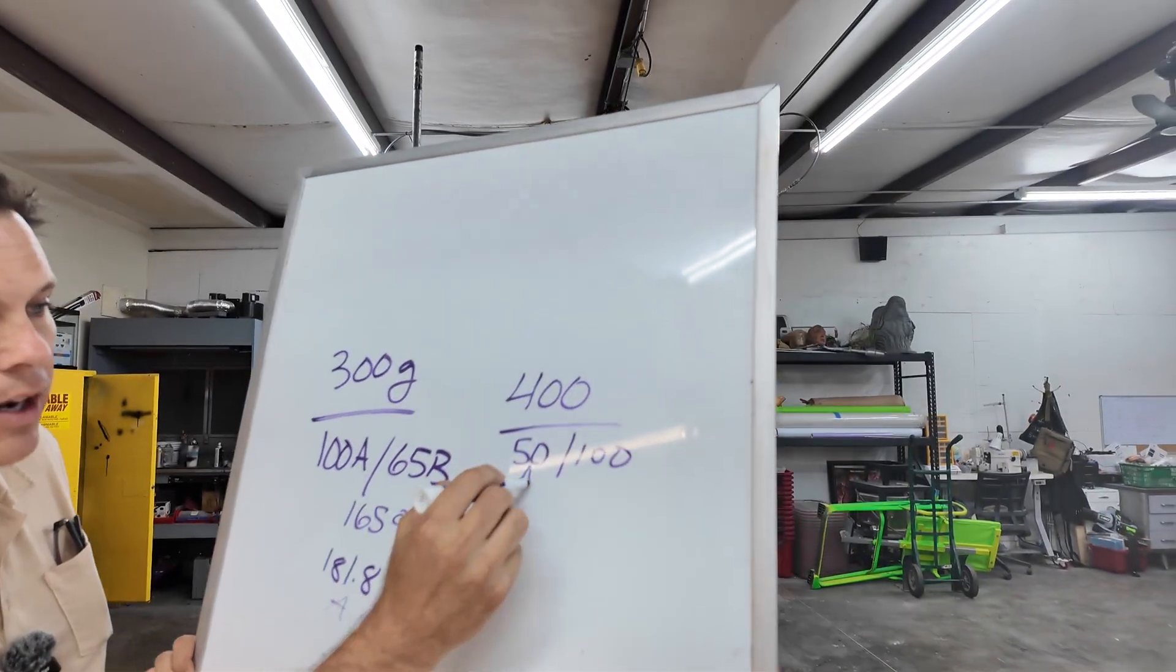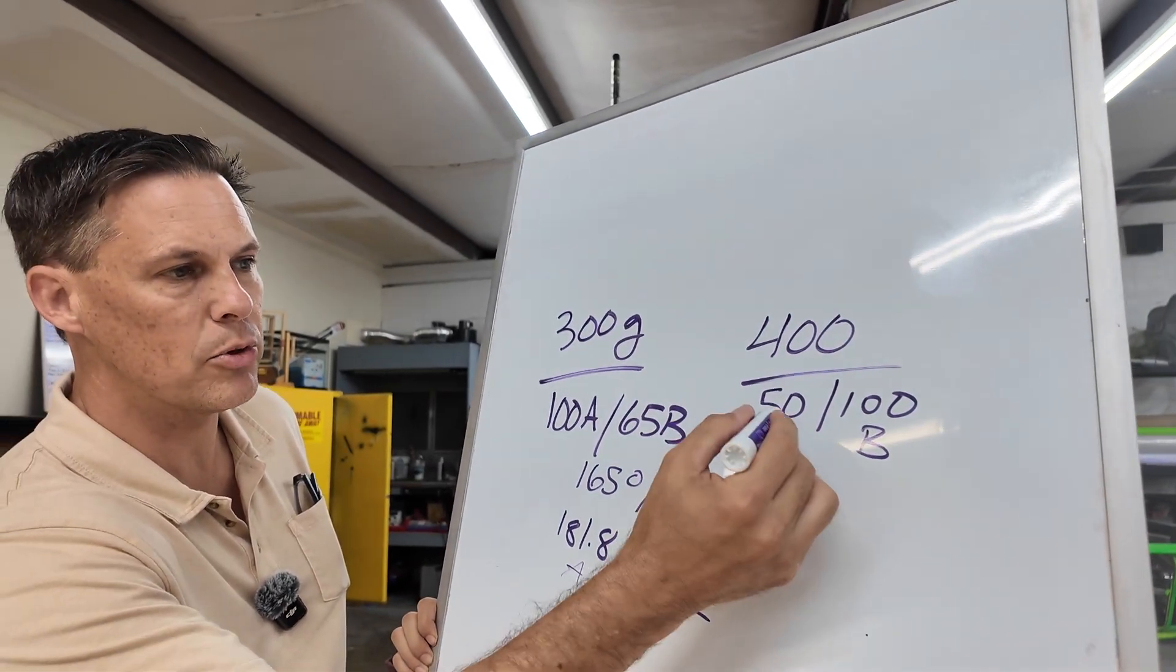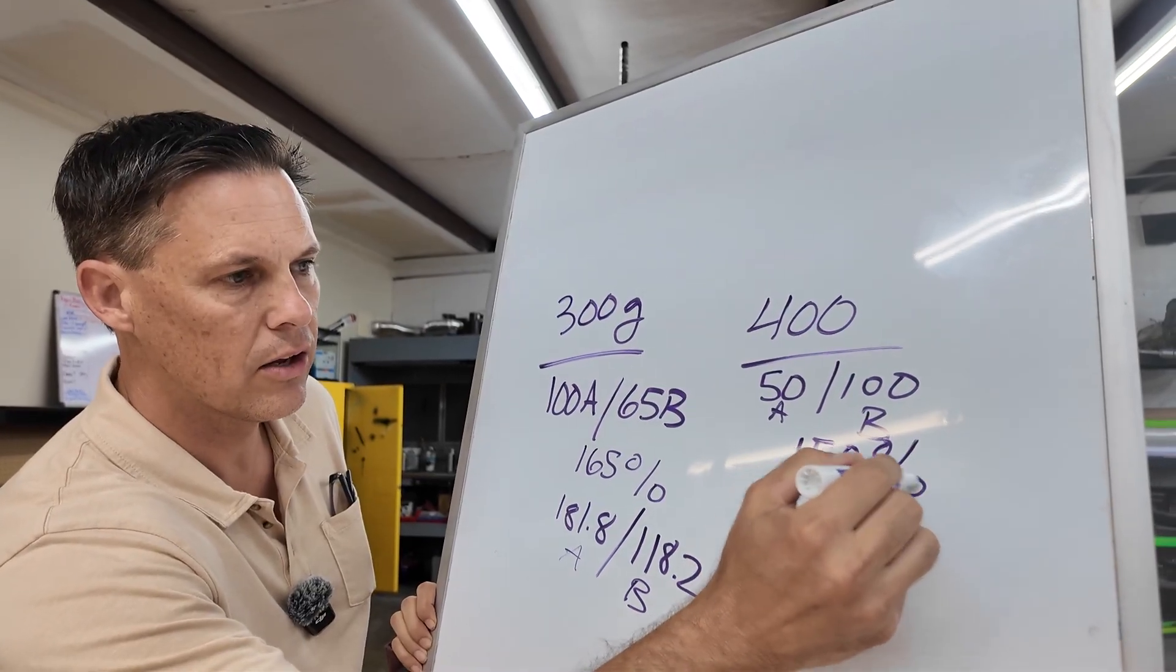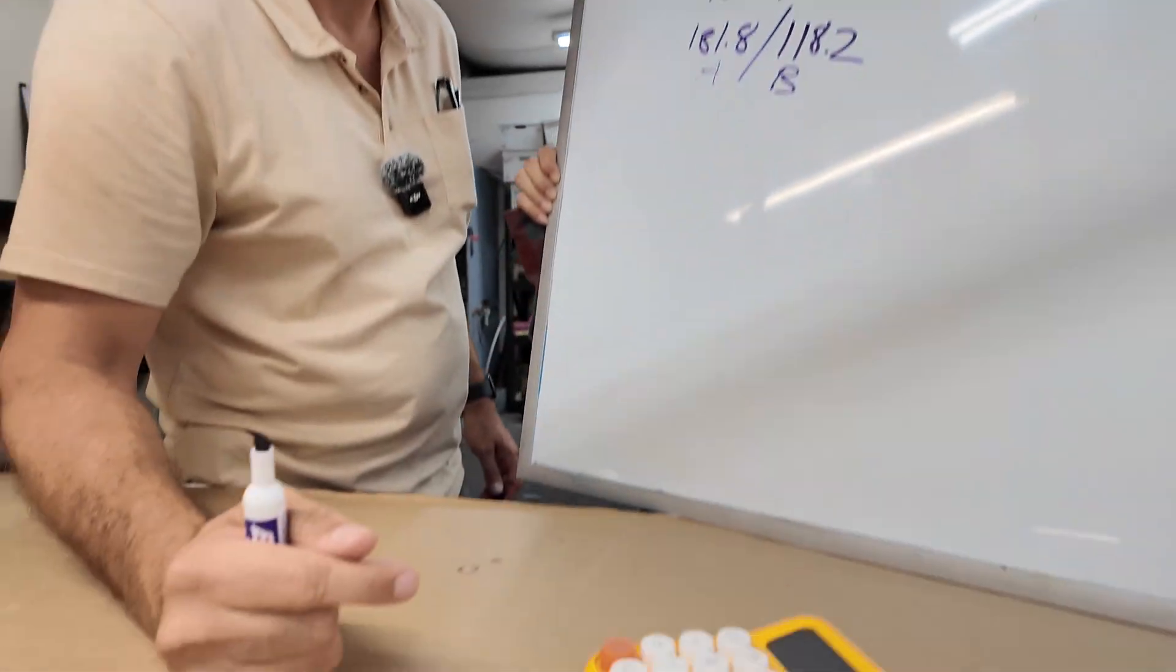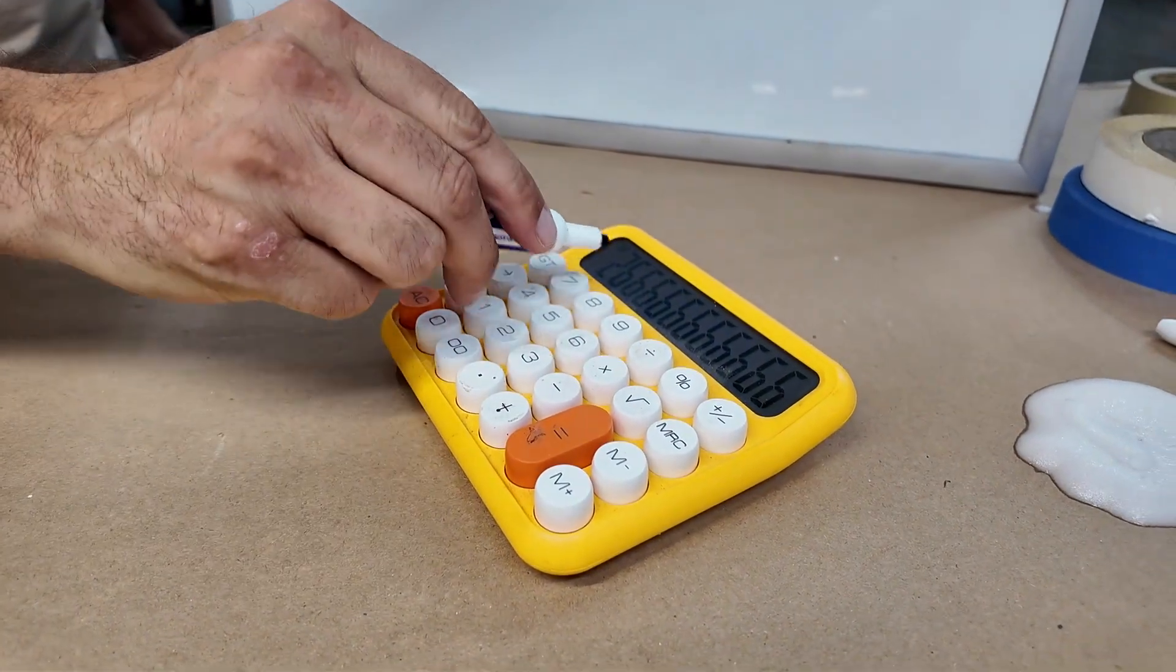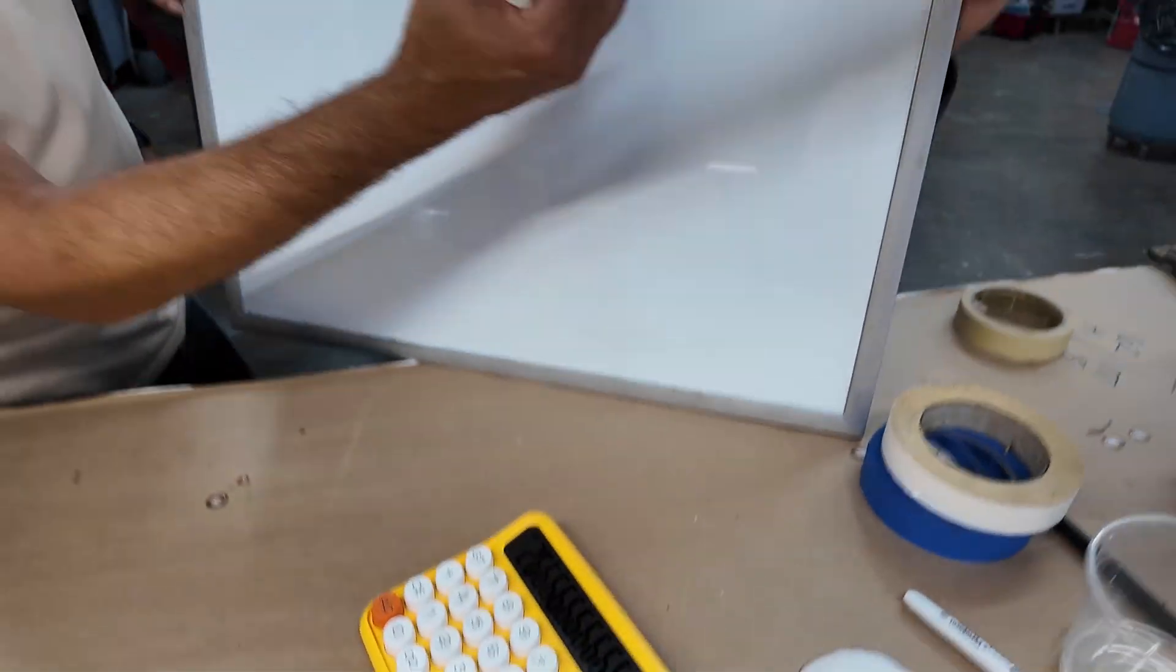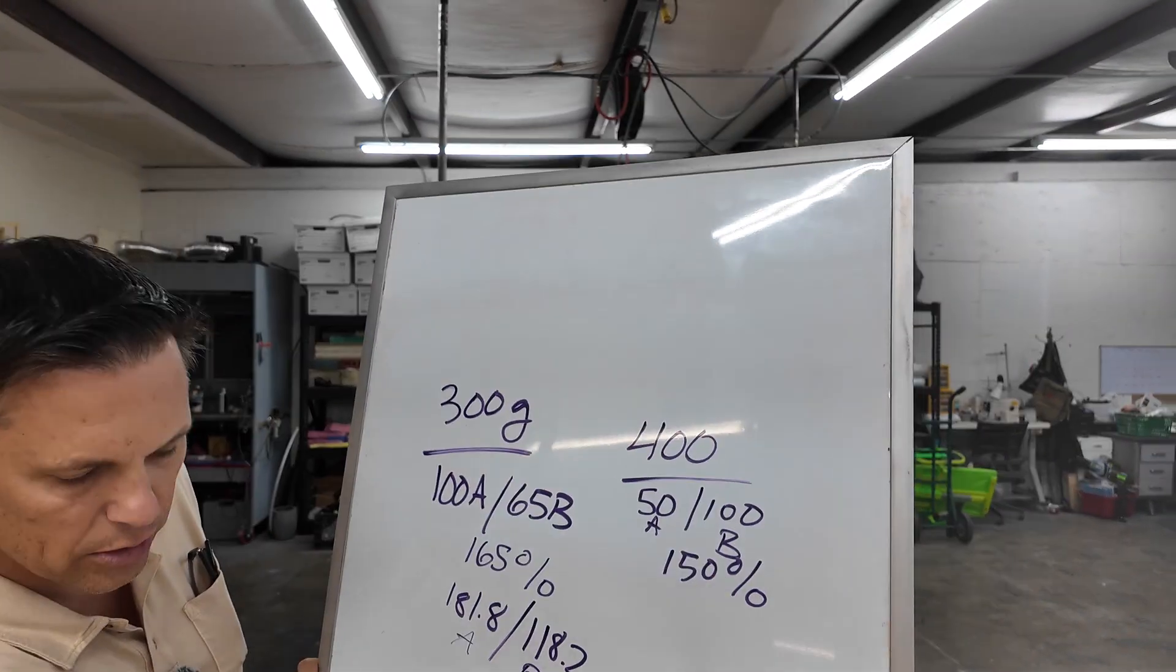So there's more B than A. I'm going to look at this as 50% plus 100%, 150%. So I'm going to divide the 400 grams by 150%. So I've got 400, divide that by 150%, and I have 266.66. Now, where do I put that? Is that on the 50 or the 100? Well, actually, it's going to be on the 100 column here. So that's 266.66.